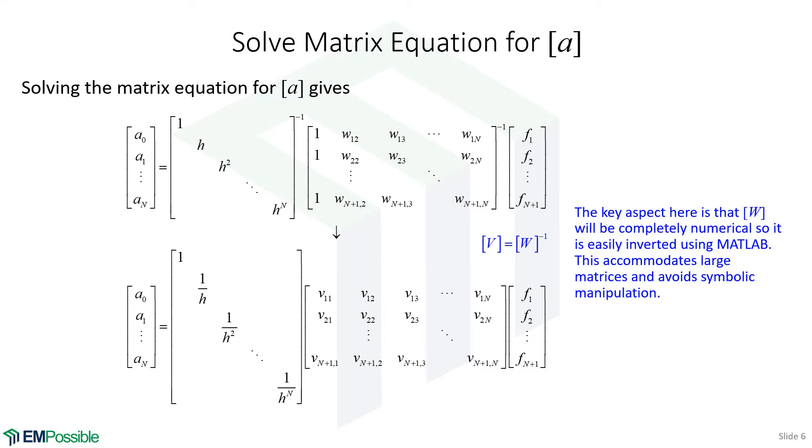We solve the matrix equation for our polynomial coefficients. If you remember the rule of matrix inverses, we reverse the order of those two matrices and take the inverse of each one individually. This is a diagonal matrix, so that's easy. We just take the reciprocal of all elements going down the diagonal. This second matrix is numerical, so we can calculate the inverse matrix in MATLAB.